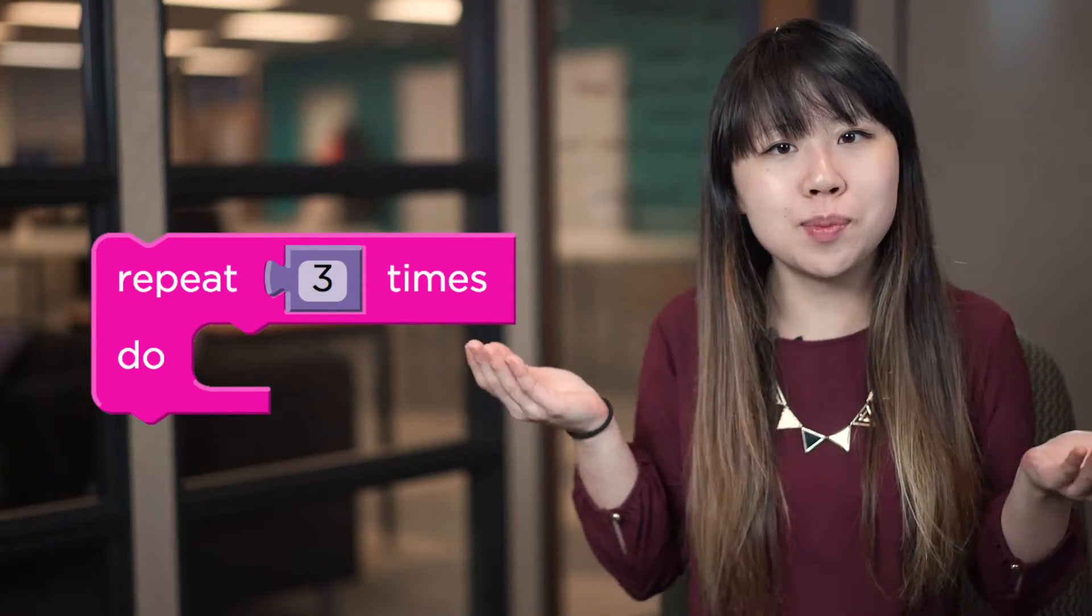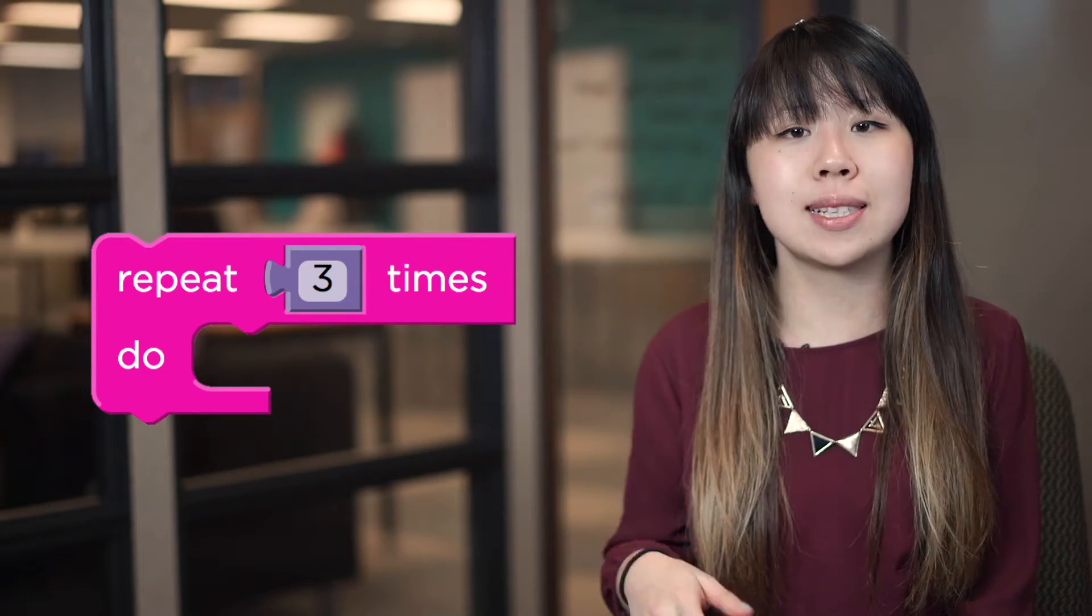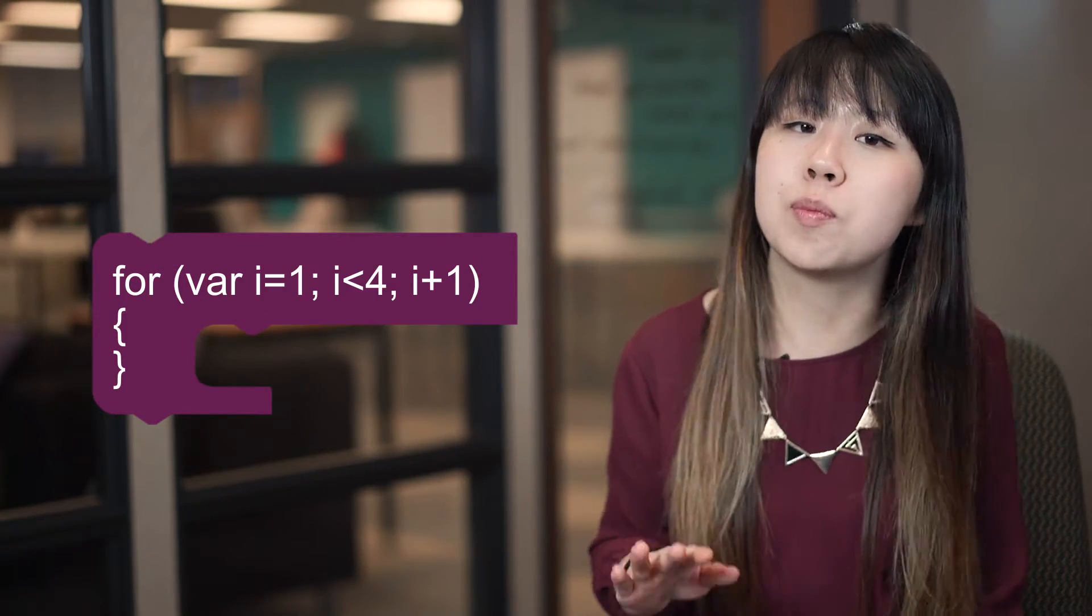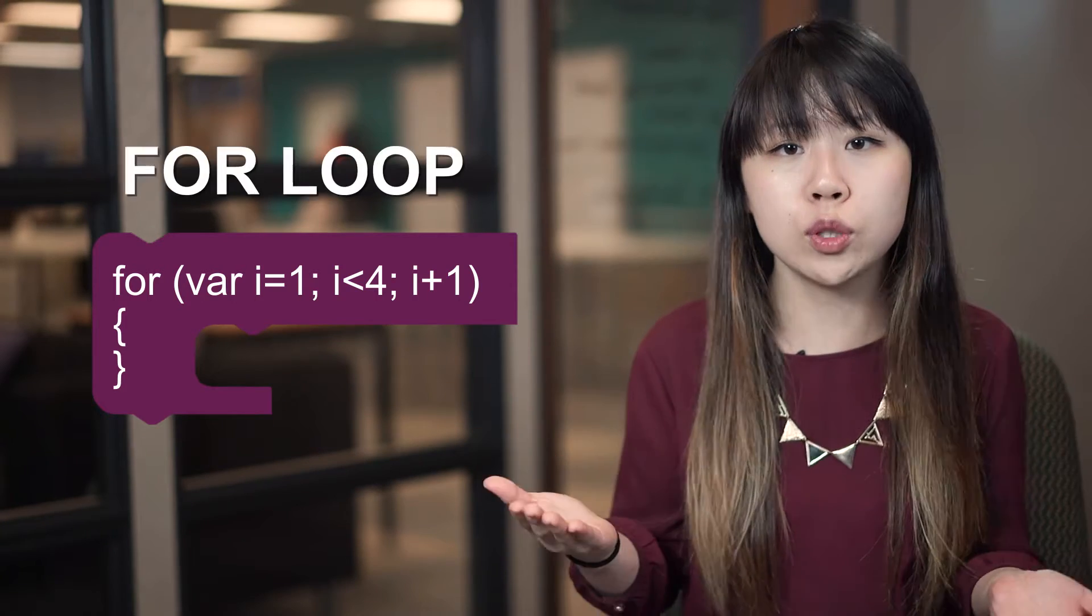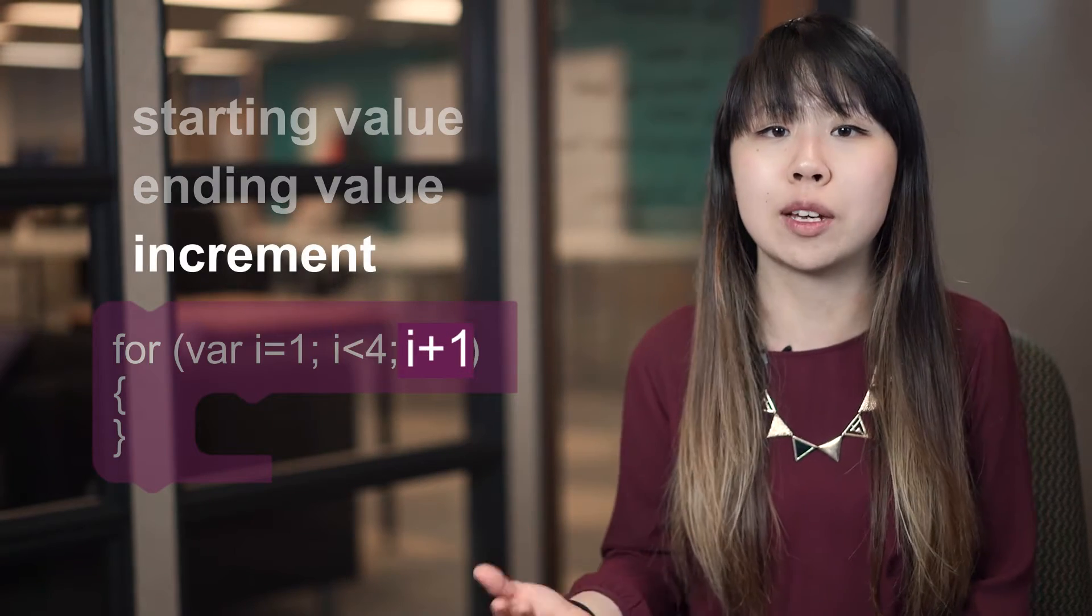So when you use a repeat block to loop your code, how does the computer know when it's repeated enough times? The repeat block is actually hiding a more sophisticated piece of code called a for loop, which counts from a starting value up to an ending value by a specific increment.